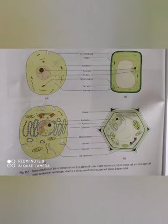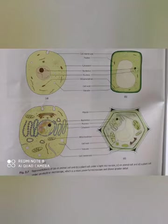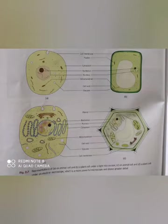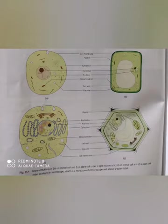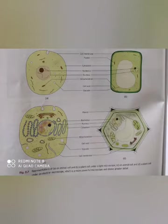Now let's revise the cell wall. The plant cell is enclosed by another layer called the cell wall, so a plant cell has both a cell membrane and a cell wall. The cell wall is made up of cellulose, a kind of carbohydrate. It gives a definite shape to the cell, makes the cell strong and rigid, and protects the cell from injury. The cell wall is freely permeable, meaning it allows all substances to enter or leave the cell — unlike the cell membrane, which is selectively permeable.